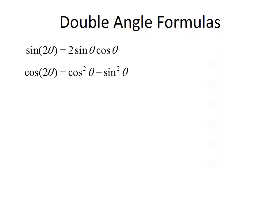The cosine of 2 theta equals cosine squared theta minus sine squared theta. An alternative version says that the cosine of 2 theta equals 1 minus 2 times the sine squared of theta. Another alternative says that cosine of 2 theta equals 2 cosine squared theta minus 1. Note that all three of these formulas are equivalent — you can go back and forth between them by applying the Pythagorean identity.